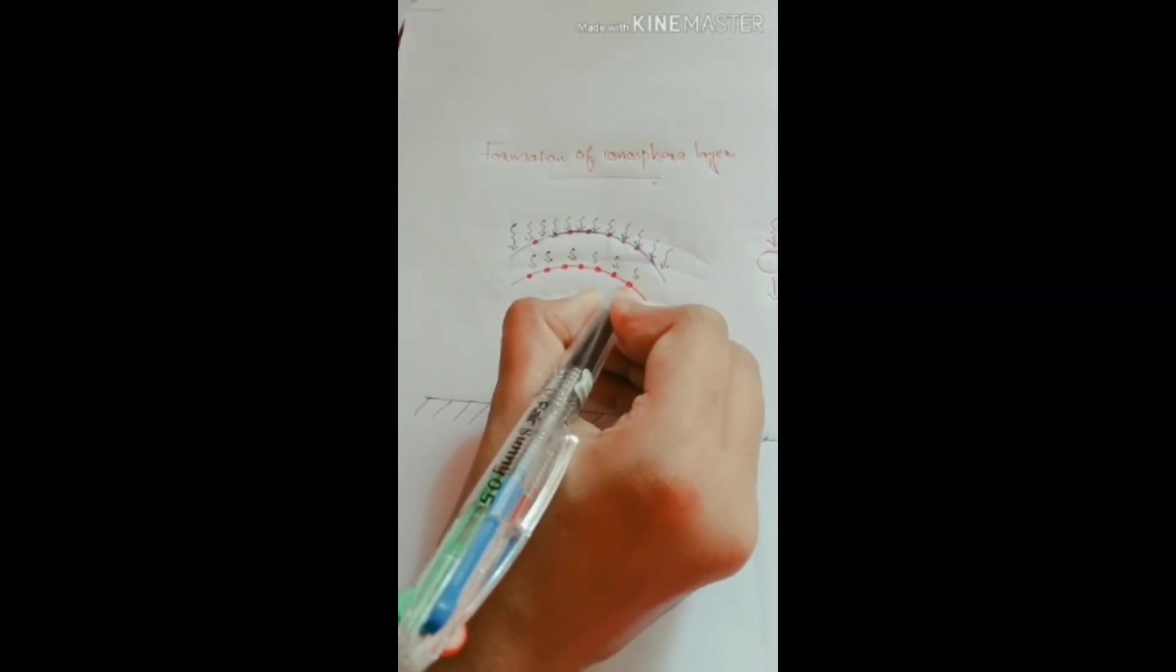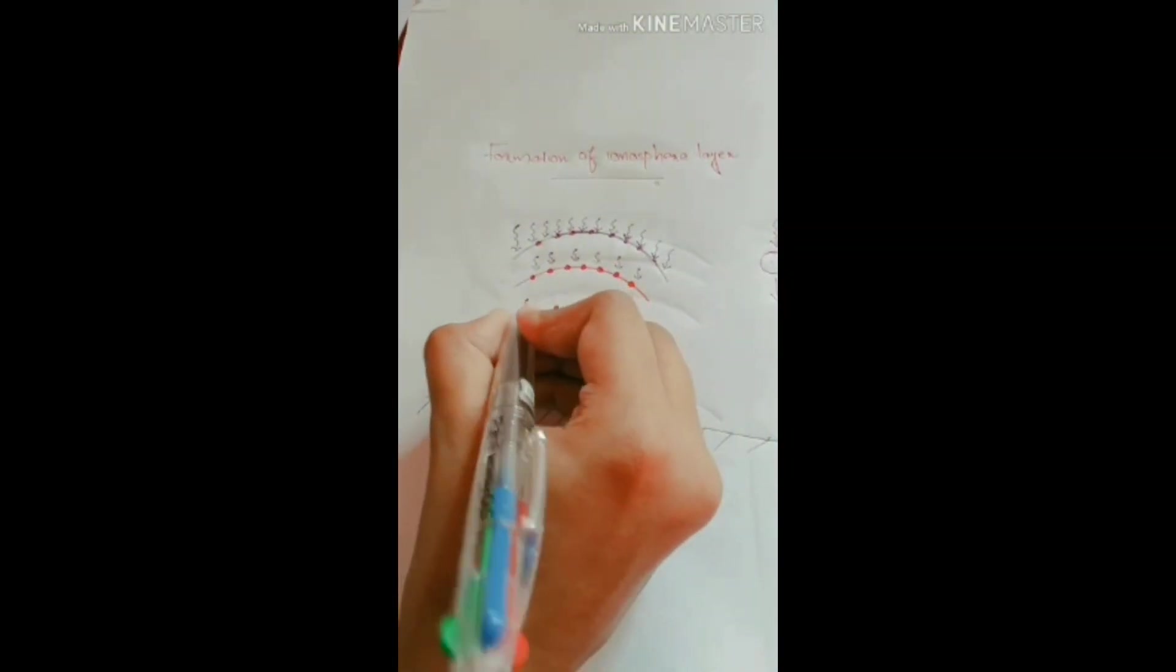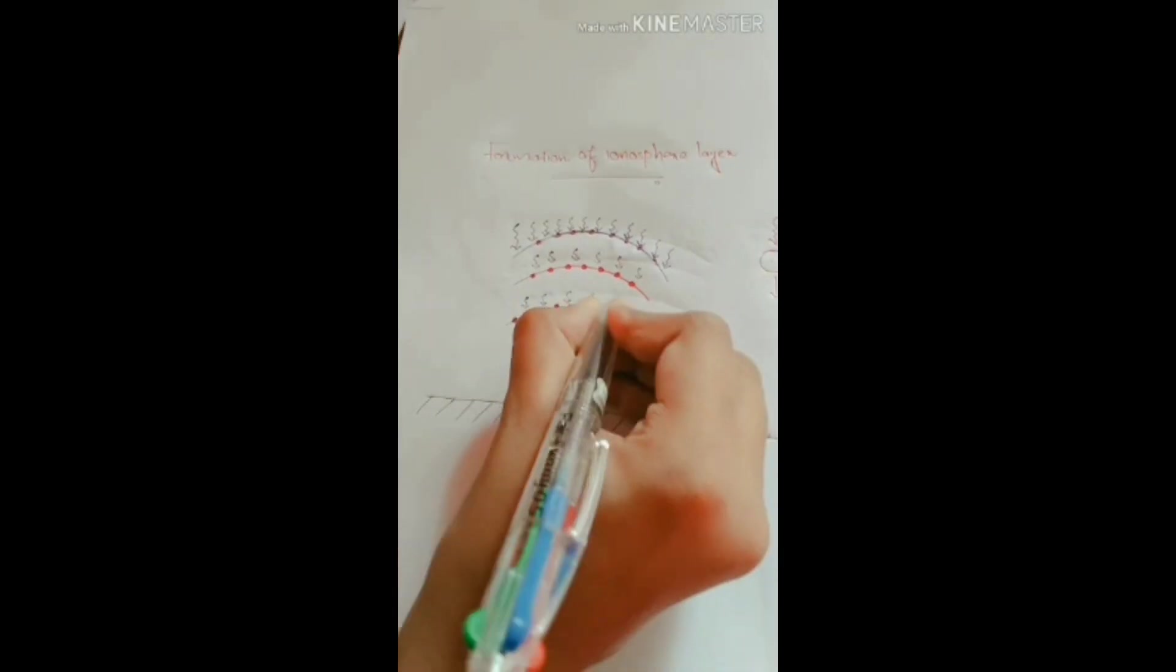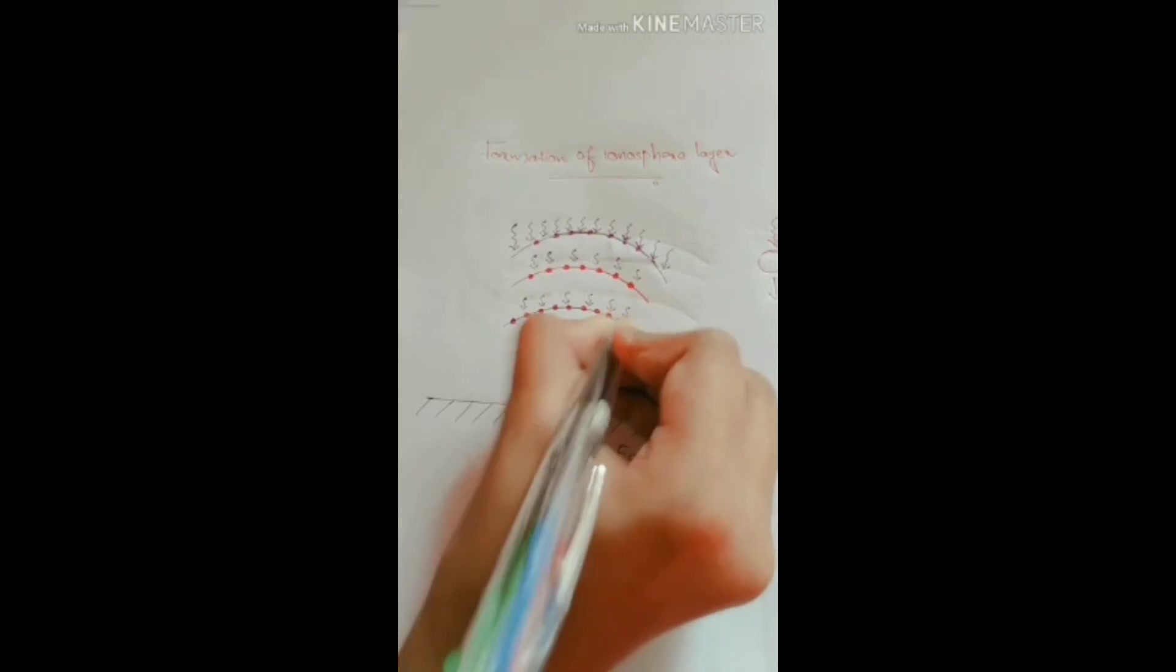This layer is also ionized. Then the cosmic ray comes to the next layer, so the density of cosmic rays is also reduced. Now everything becomes ionized.